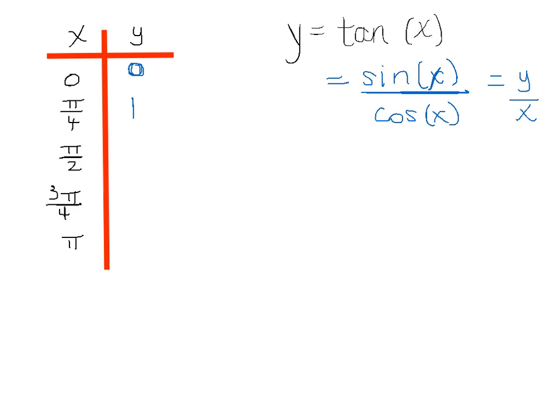At pi over 2, x is 0, y is 1. So we're looking at 1 over 0, which is undefined. We'll talk about what that means in a moment.